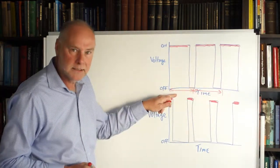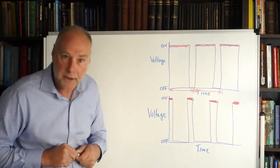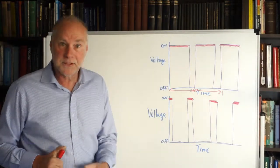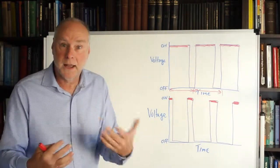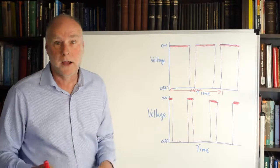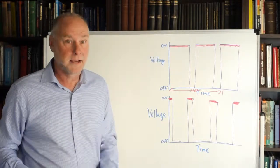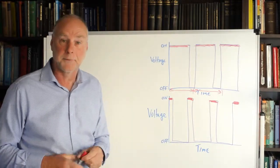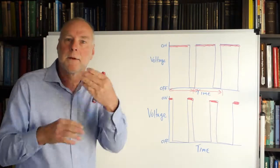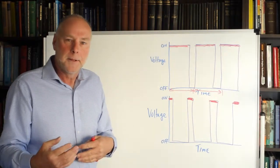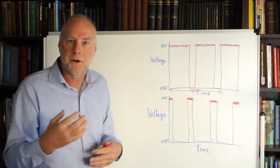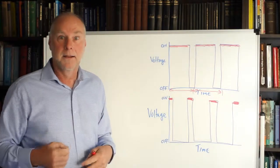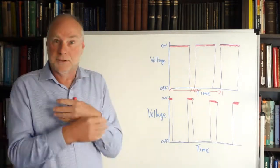Now how quickly these cycles occur is called the frequency, and the frequency on most pulse width modulation control systems is quite high, 100 hertz, 100 times a second, maybe even 1,000 times a second. Now think about this, think about controlling a fan.